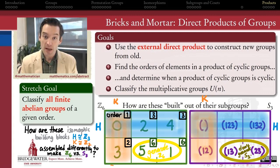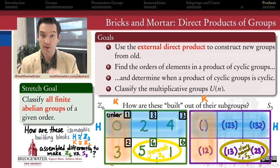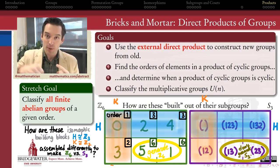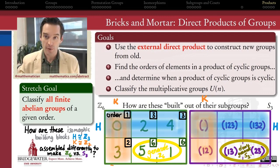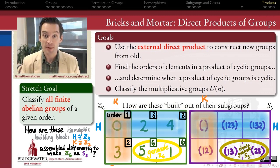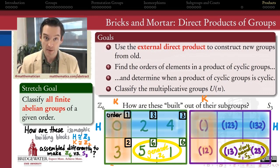Now that we've been able to classify what the product of two cyclic groups looks like in this construction, we're in a position to finally pull the mask off of the multiplicative groups — the groups of integers which are relatively prime to n, under the operation of multiplication mod n. We're finally equipped to understand what these groups look like, what is their fundamental underlying structure as finite abelian groups.